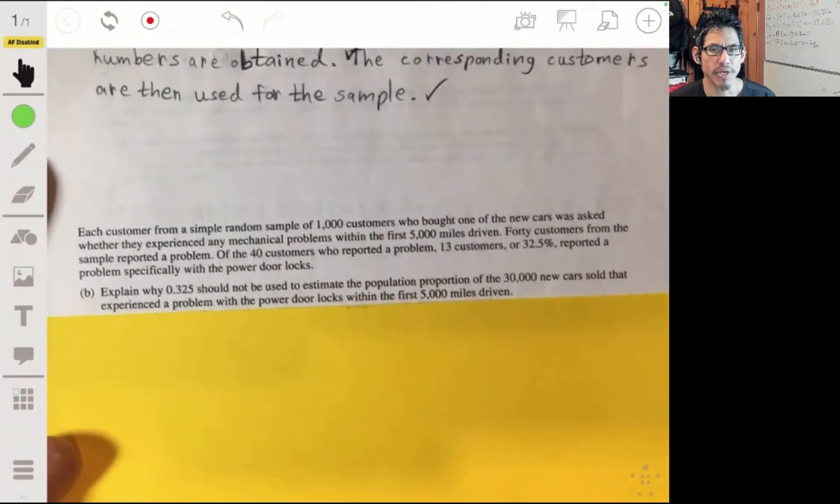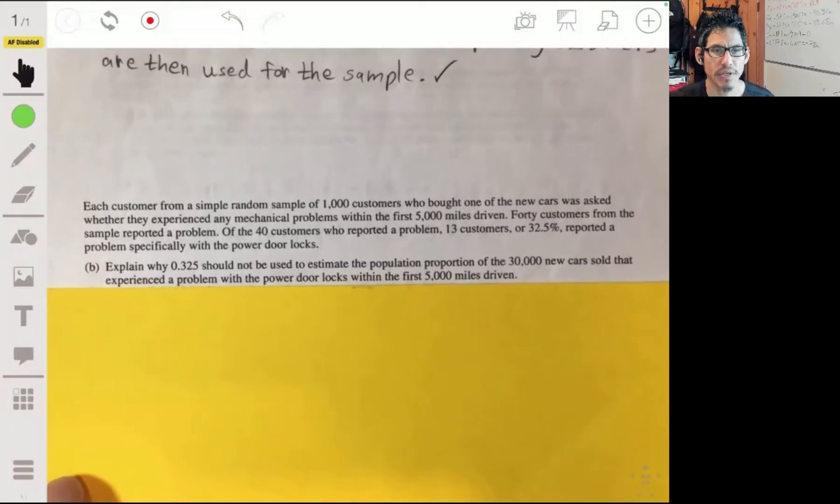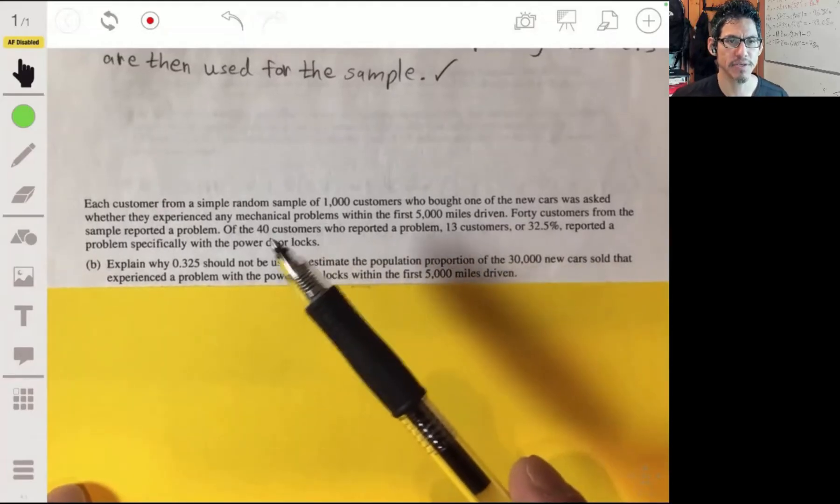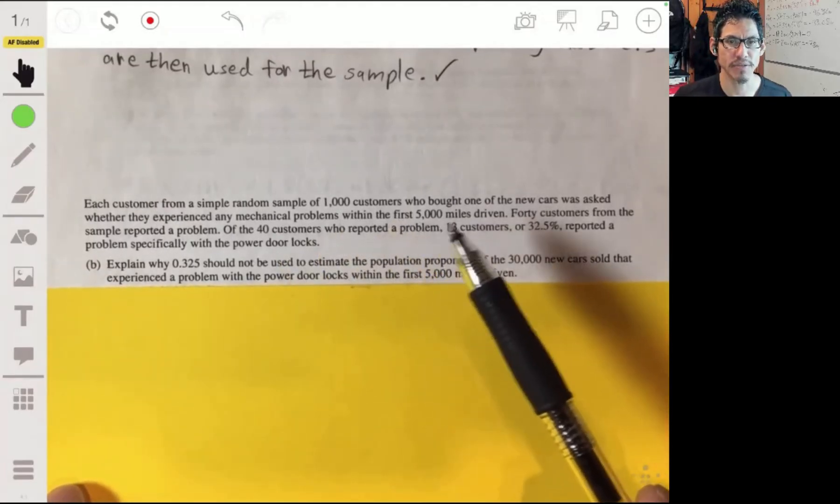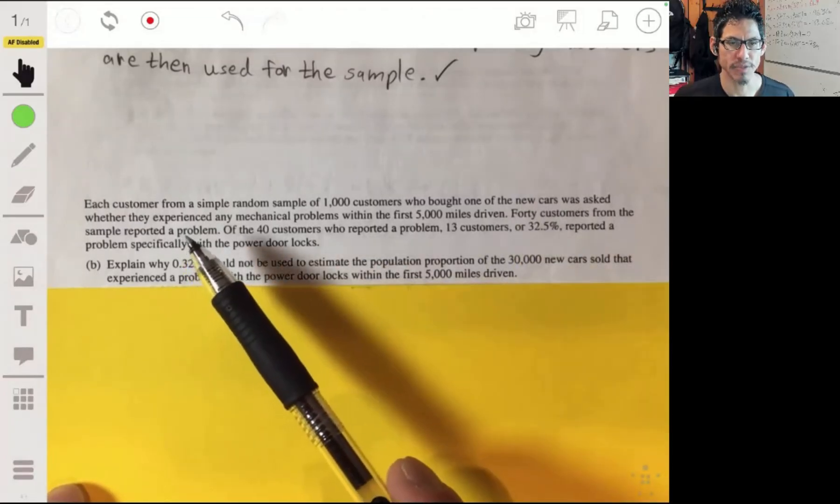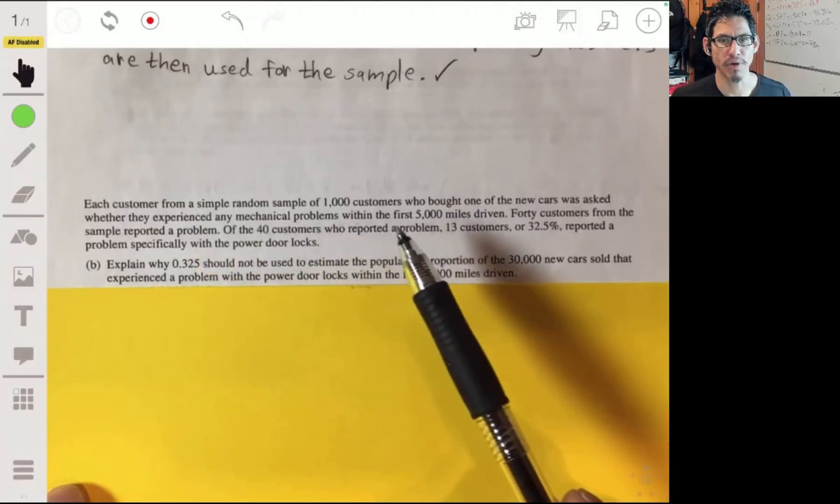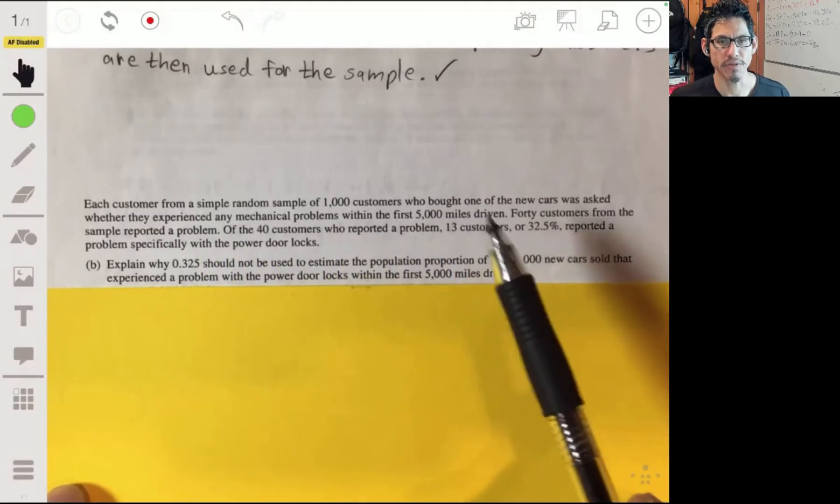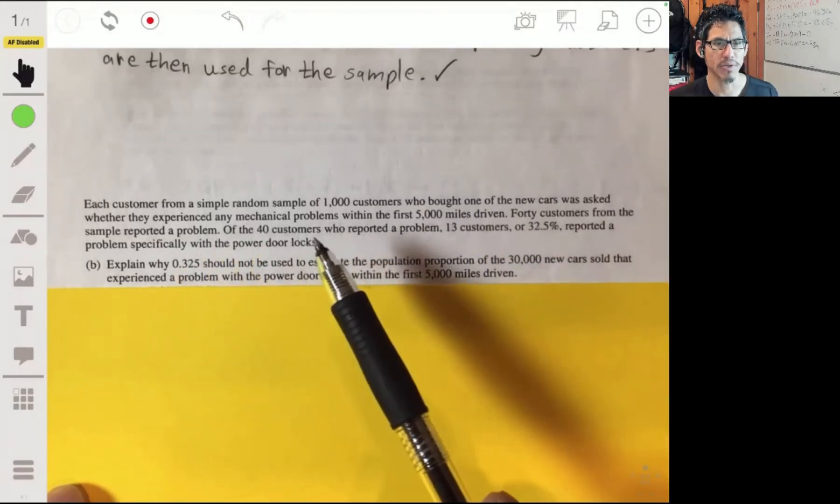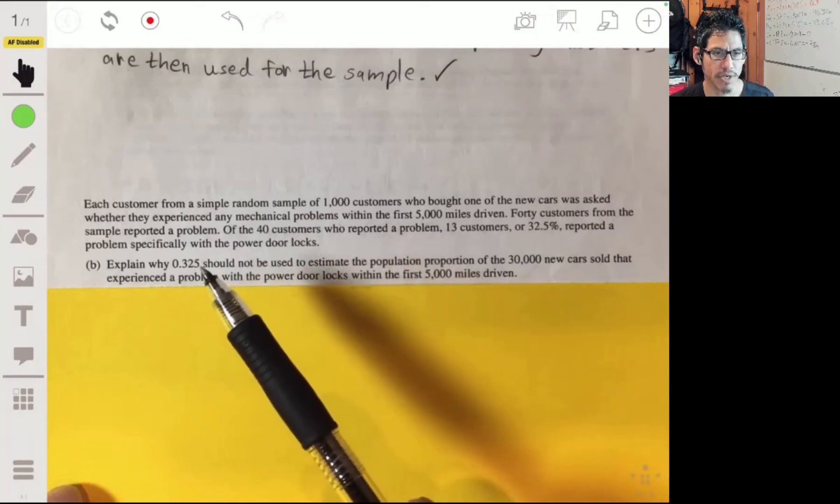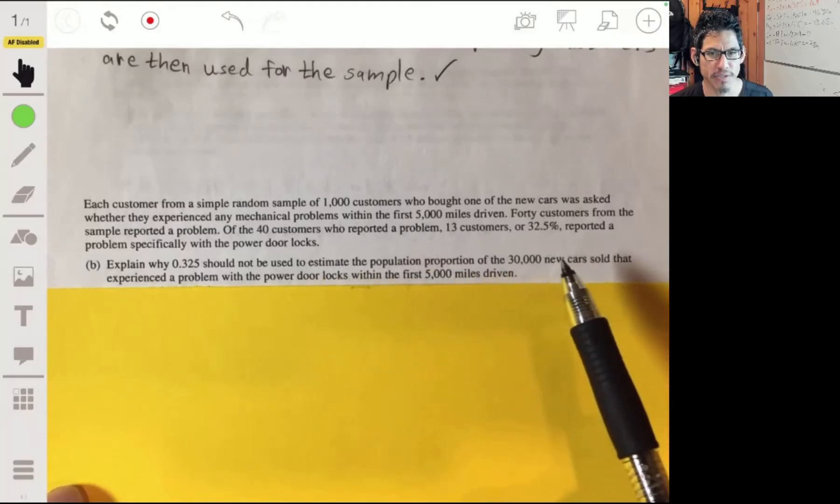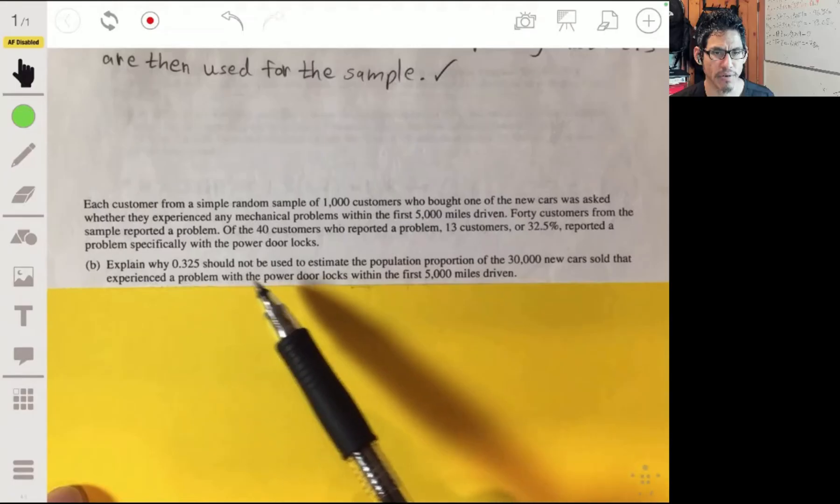Alright, part b. Each customer from a simple random sample of a thousand customers who bought one of the new cars was asked whether they experienced mechanical problems in the first 5,000 miles driven. 40 of those customers from the sample reported a problem. Of the 40, 13 of those customers, the 13 of 40 or 32.5%, reported problems specifically with the power door locks. Explain why 0.325 should not be used to estimate the population proportion of 30,000 new cars sold that experienced a problem with power door locks within the first 5,000 miles.